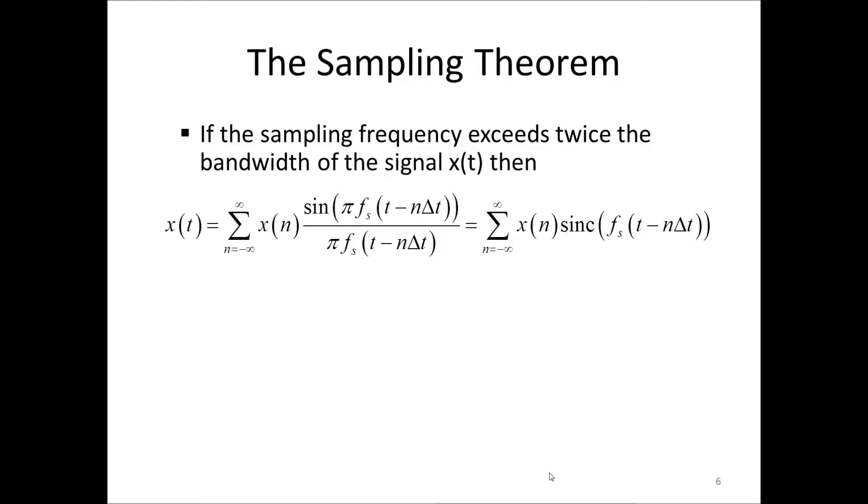Now, the sampling theorem can be mathematically formulated as here. If the sampling frequency exceeds twice the bandwidth of the signal, x of t, the analog signal, then the analog signal, x of t, can be expressed as a sum, n goes from minus infinity to plus infinity, of the samples of the signal, x of n, times a sin x over x type of function. This is also called the resampling formula. And because this sin x over x is so often occurring in signal analysis, it even has its own name. It's called a sinc function. Now, this is a bit intimidating. So, I will wait until the next slide to describe what this is.